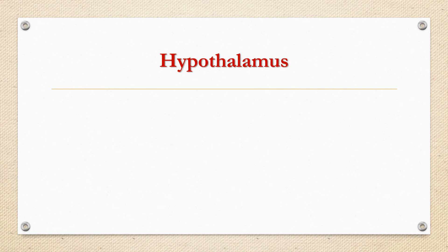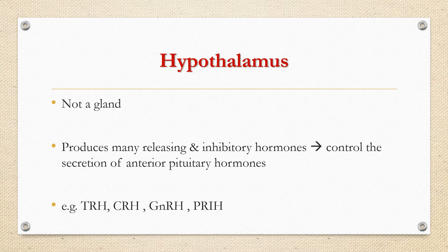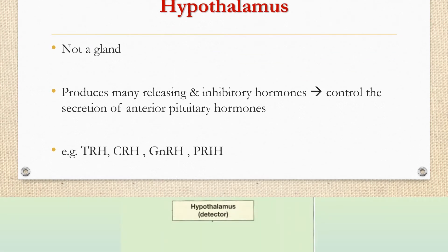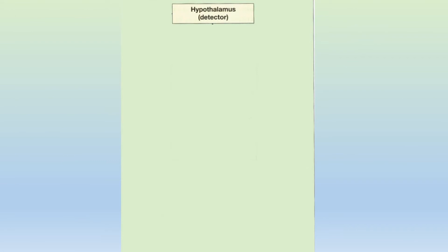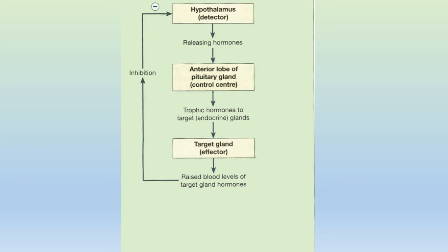The role of the hypothalamus in the endocrine system: it is not a gland but produces many releasing and inhibitory hormones which control the secretion of anterior pituitary hormones, like thyrotropin releasing hormone, corticotropin releasing hormone, gonadotropin releasing hormone, and prolactin release inhibitory hormone commonly known as dopamine. In general, hypothalamus works as a detector which detects blood levels of target hormones. When target hormone level is low, it secretes a releasing hormone which acts on the anterior pituitary to secrete a trophic hormone, which then stimulates the target gland to release the functional hormone. When target gland hormone level increases, it sends signals to the hypothalamus to decrease the secretion of releasing hormone — this is called negative feedback inhibition.